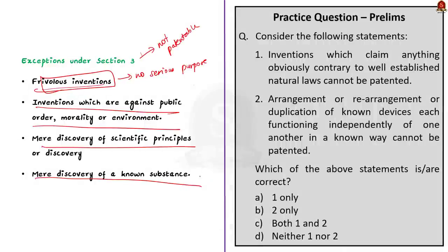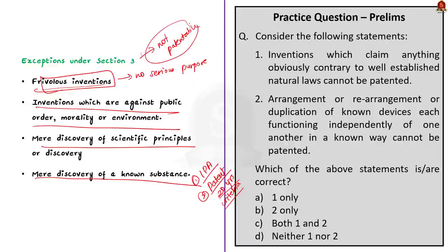In this discussion, we saw about the Indian Patents Act. A patent is an exclusive right granted to the patentee for his invention, for a term of 20 years. For something to be patented, it should be new, non-obvious, useful in a bona fide manner, have an inventive step, and be capable of industrial application. We also saw some inventions which are not patentable, given under Section 3 of the Indian Patent Act 1970.